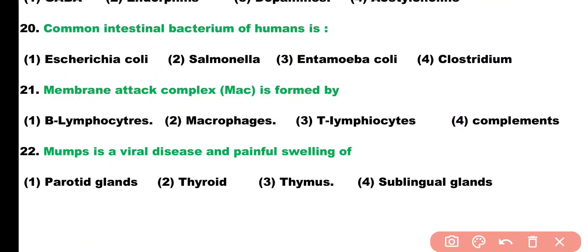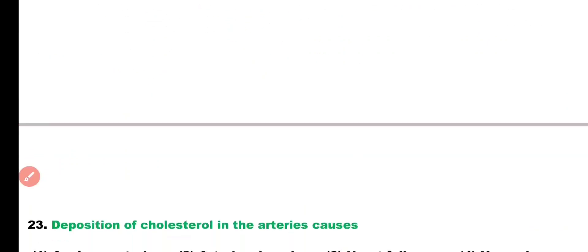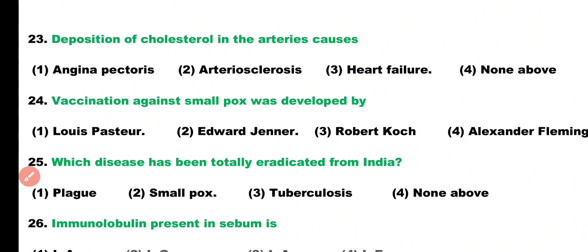Question number twenty-two: mumps is a viral disease causing painful swelling of which gland? Options: parotid gland, thyroid gland, thymus gland, sublingual gland. Correct answer is option one — mumps is a viral infection in which painful swelling occurs in the parotid salivary gland.